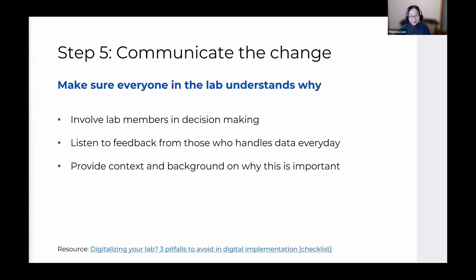Step Five: Communicate the change. Any changes in procedural or technical practices — how people save or name files — need to be communicated clearly. It shouldn't just be 'we're doing it this way now.' Make sure everyone understands why. Involve lab members in the decision-making and listen to feedback from those who handle data every day, because they know what will slow them down or speed things up. Provide the context: 'We need this for our funding application,' or 'Our collaboration requires it' — give people motivation to actually work on it.